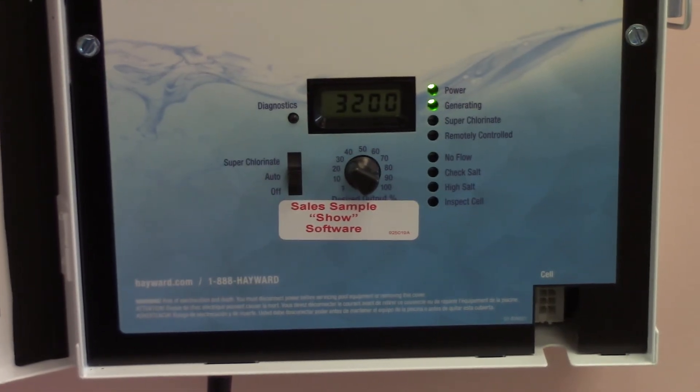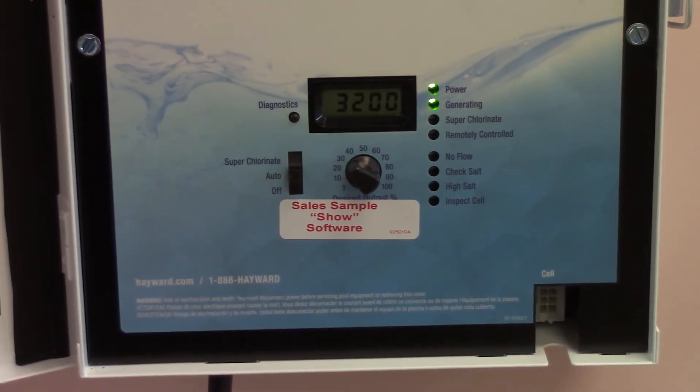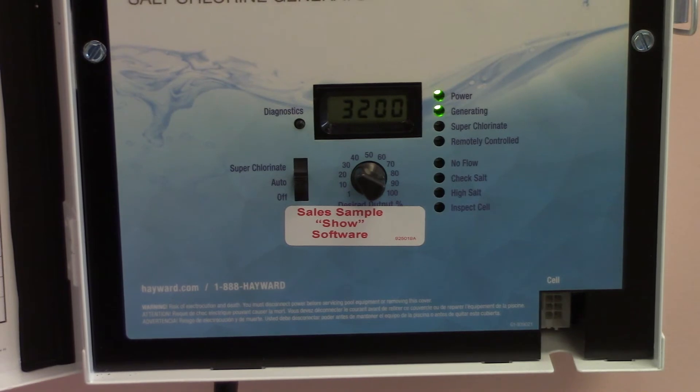As you can see right now the only lights that we have on in our system is the green showing that we have power and the green showing that we're generating chlorine. The switch itself is in the auto position which is where it's going to spend most of its life and our dial setting is set at about 30% for generation.